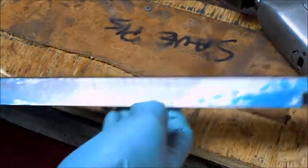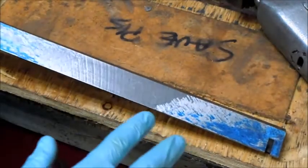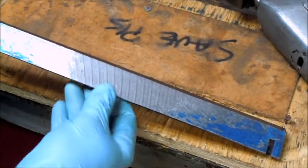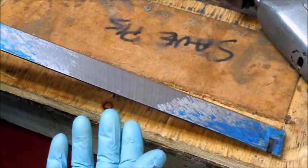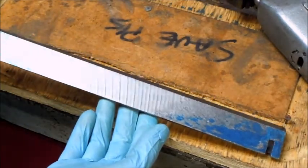So this gib, in Connelly's machine tool reconditioning book, they describe two different methods for how to scrape in a gib.